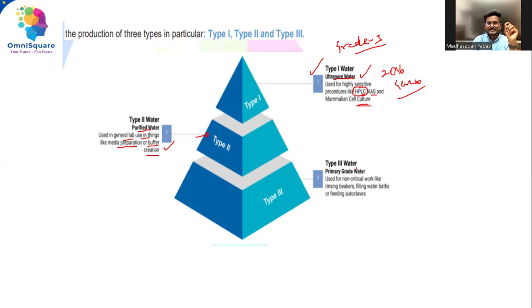Now, what about type 3 or grade 3 type of water? It is a primary grade water used for non-critical work like rinsing beakers, filling water bottles, or filling water plates. Only regular purposes where the importance is less, in that case, the grade 3 water is used.